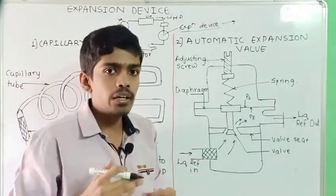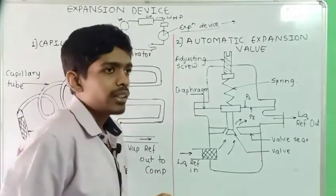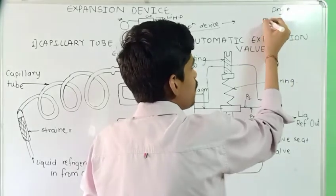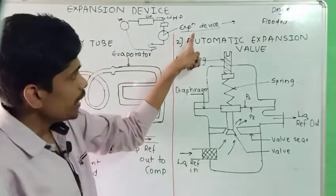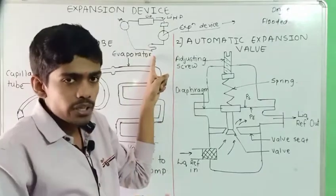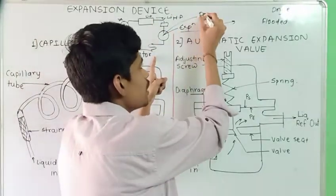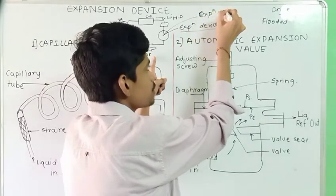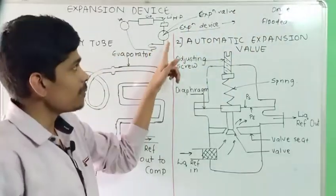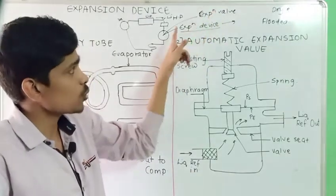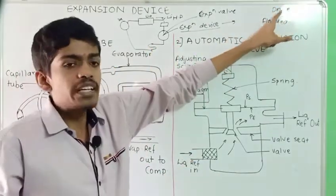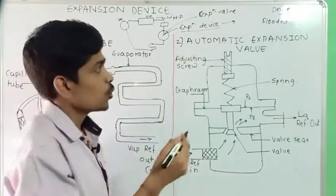There are two types of evaporator: one is the dry expansion evaporator and another is the flooded type evaporator. When a dry expansion evaporator is used, the expansion device is known as an expansion valve. When a flooded type evaporator is used, the expansion device is known as a float valve.